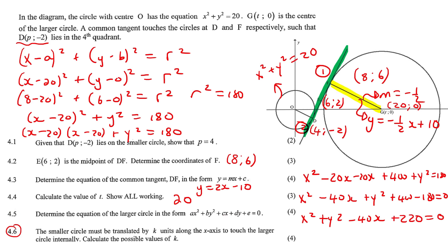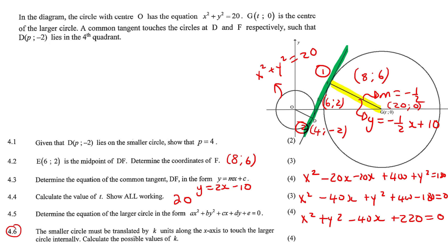The smaller circle must be translated by k units along the x-axis to touch the larger circle internally. Calculate the possible values of k. For two circles to touch internally, or let's first talk about externally. Externally is when two circles look like this. That is external touching. This is external. Then internal is when you have something like this. That's internal. So they want to take this circle and they want to move it this way. So that we get those scenarios taking place. Now it will happen twice.